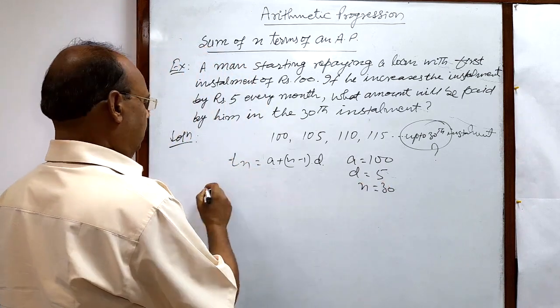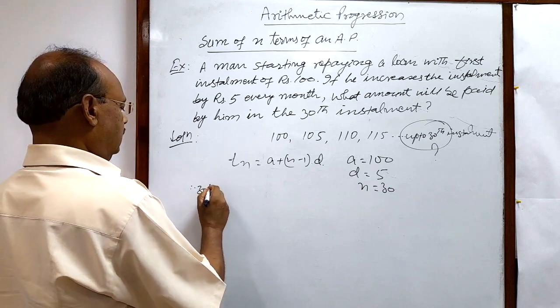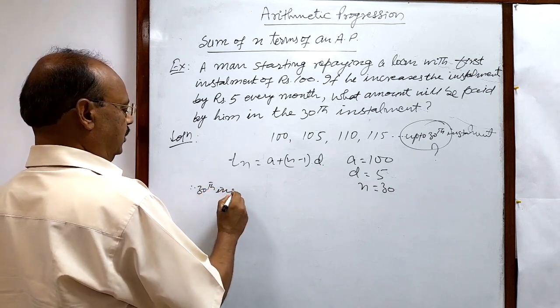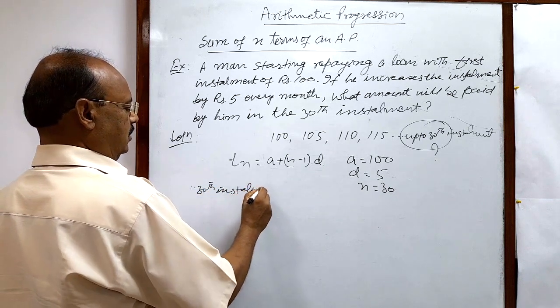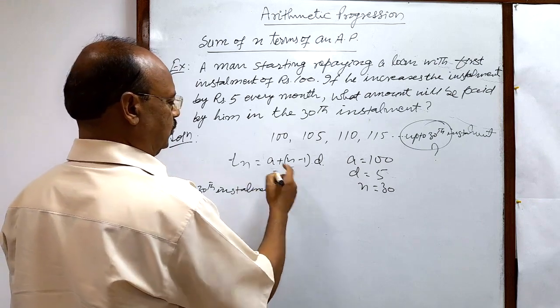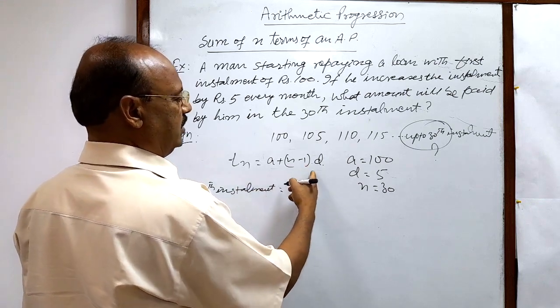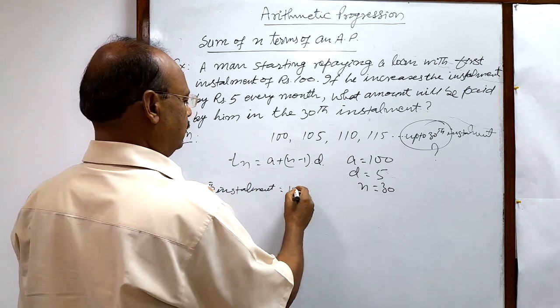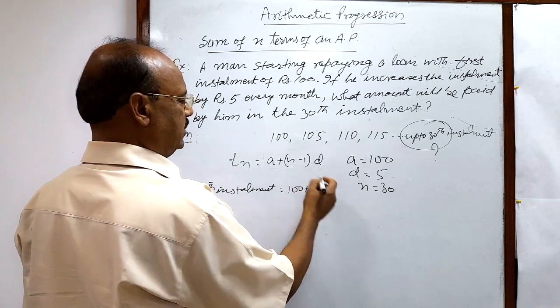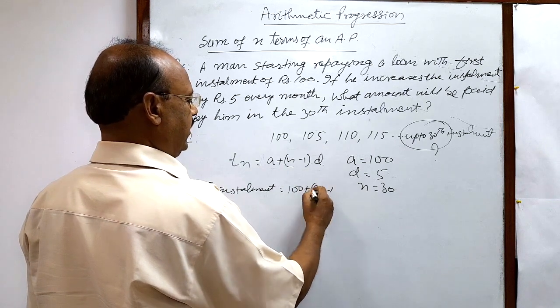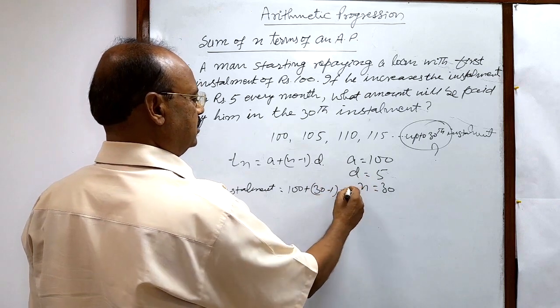So T_n, therefore the 30th installment amount, is equal to a plus (n minus 1) into d. a is 100 plus (n minus 1), that is (30 minus 1) into d which is 5.